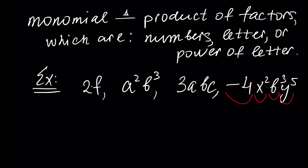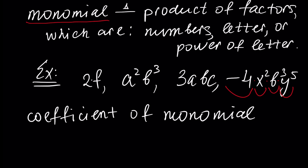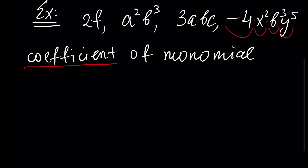Next, after the concept of monomial, we have to understand the concept of coefficient. Here we have the coefficient of a monomial. For example, for monomial 2F, we can say that 2 is a coefficient — so we have 2 of F, meaning 2 times F, which is F plus F, 2 times.